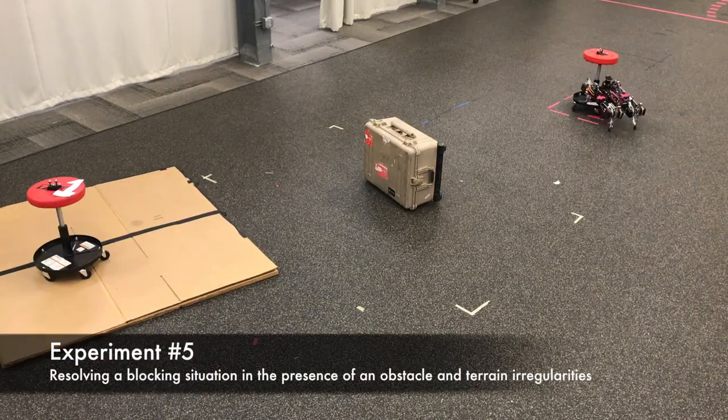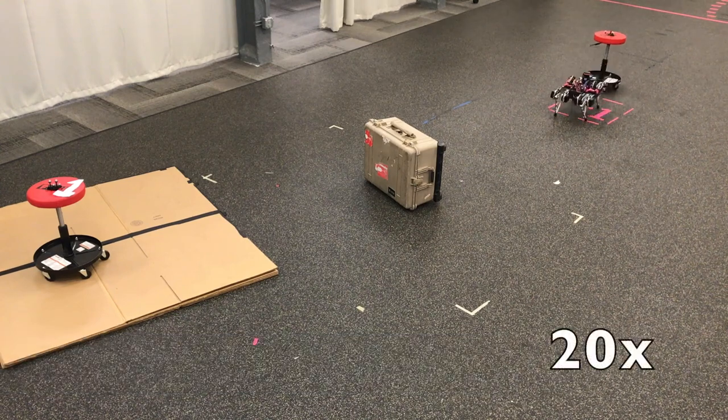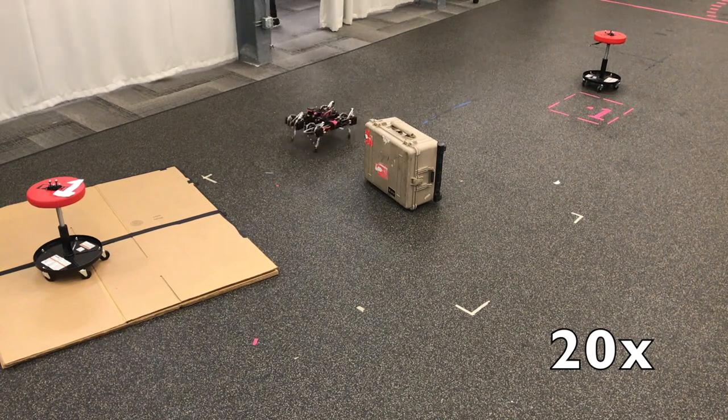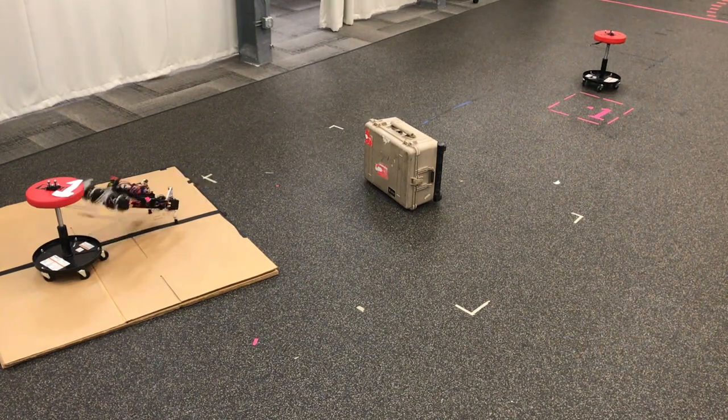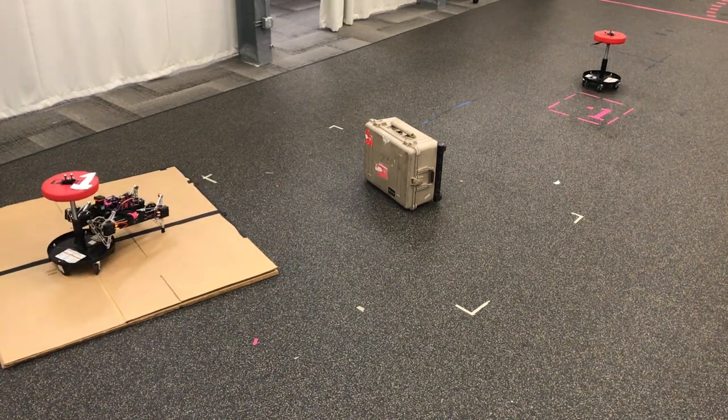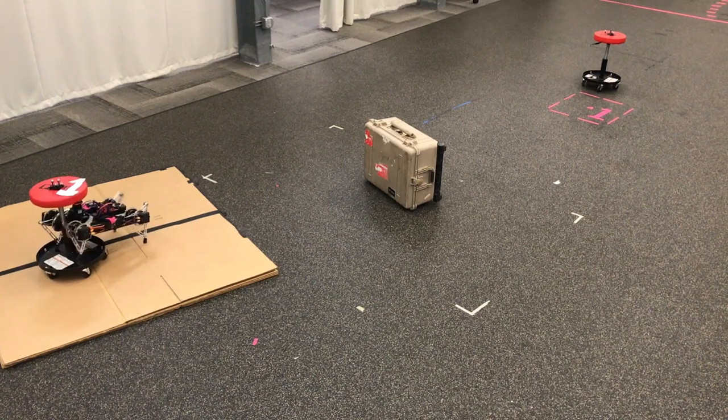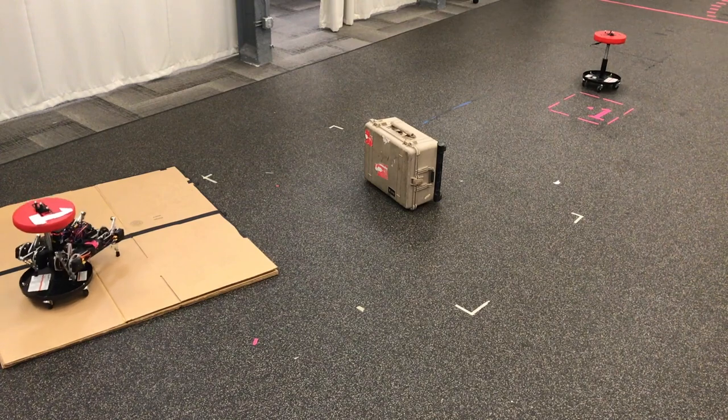In this version of the experiment, we introduce obstacles and terrain irregularities in the form of a small cardboard platform. While uncertainty is unknown to the deliberative plan, the robustness of the constituent gates and the determination of the reactive planner allow it to traverse this obstacle despite its significant effect on the robot and stool.